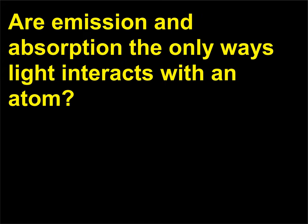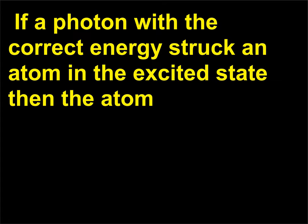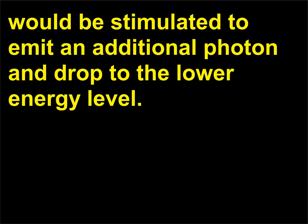Are emission and absorption the only ways light interacts with an atom? In 1917 Albert Einstein proposed a third way light could interact with an atom. If a photon with the correct energy struck an atom in the excited state, then the atom would be stimulated to emit an additional photon and drop to the lower energy level.